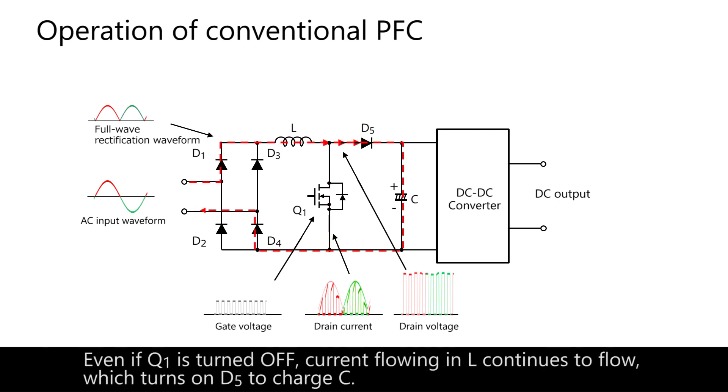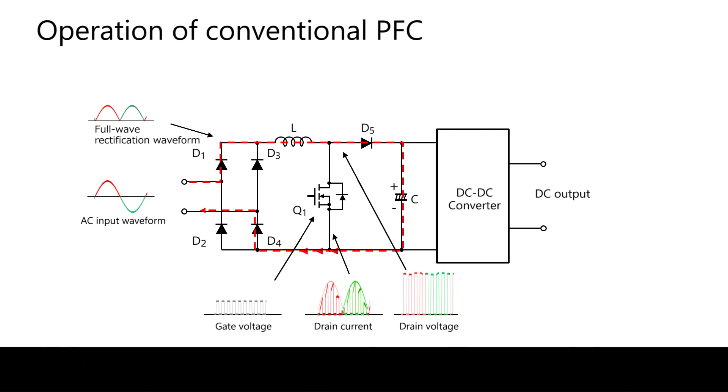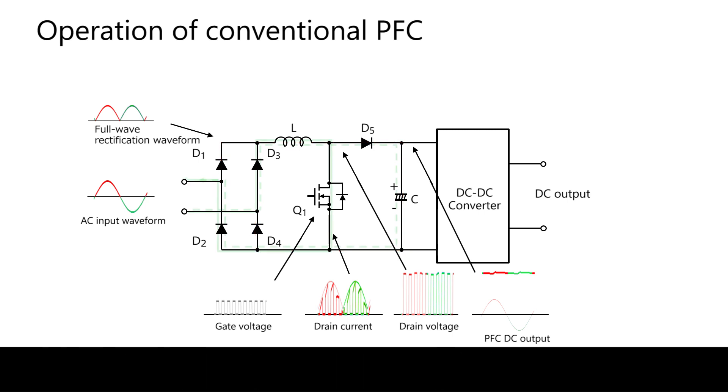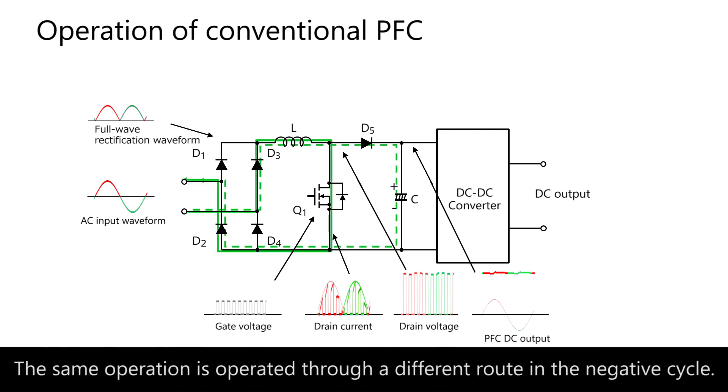Even if Q1 is turned off, current flowing in L continues to flow, which turns on D5 to charge C. This transfers the energy accumulated in L to C, which generally increases the voltage to about 380 volts. The same operation is operated through a different route in the negative cycle.